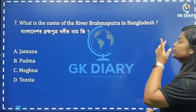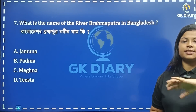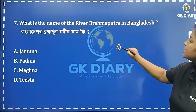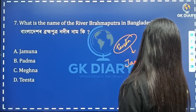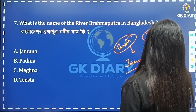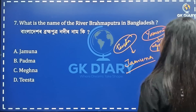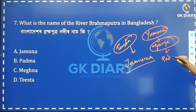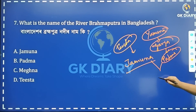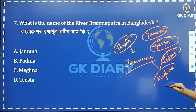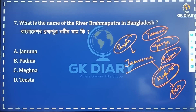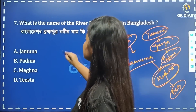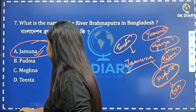What is the name of the river Brahmaputra in Bangladesh? When Brahmaputra crosses into Bangladesh, it meets the Tista river. In Bangladesh, the Brahmaputra is called Jamuna — note the difference from Yamuna, which is a Ganga tributary. Jamuna is the correct answer — Option A.